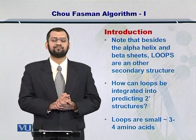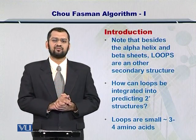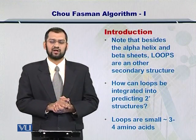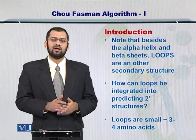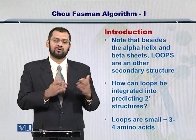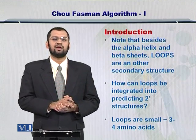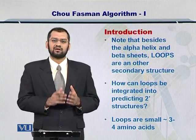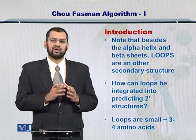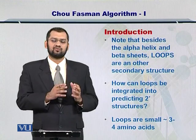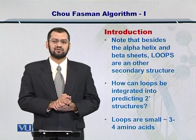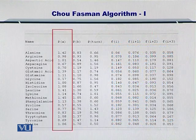Besides the alpha helices and beta sheets, there are loops and turns as well. We need to see how to predict the loops and turns in the protein structure. Remember that loops and turns are very important for the functional and active sites in a protein structure. So let's start the Chou-Fasman algorithm.